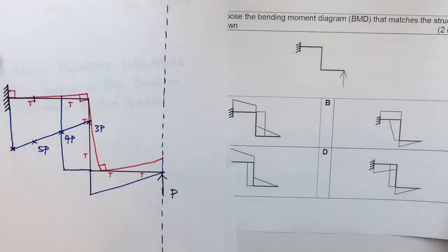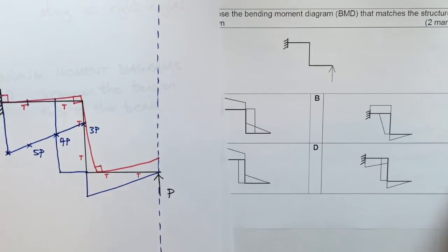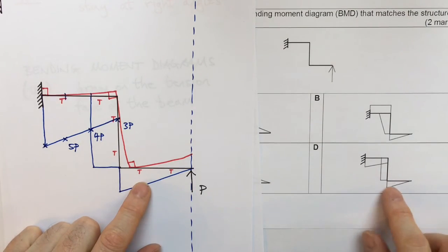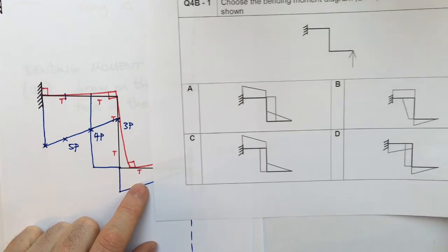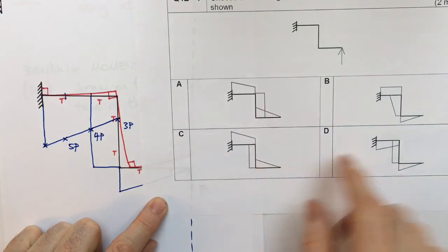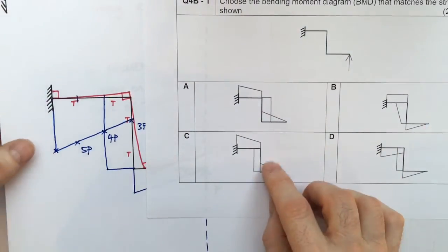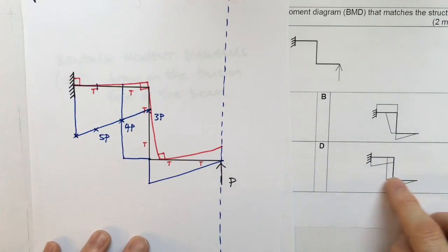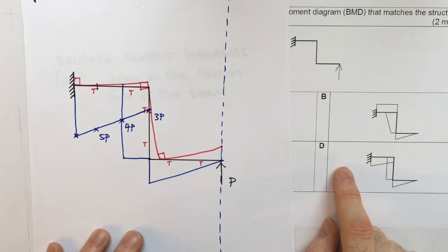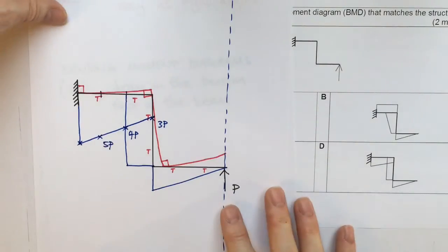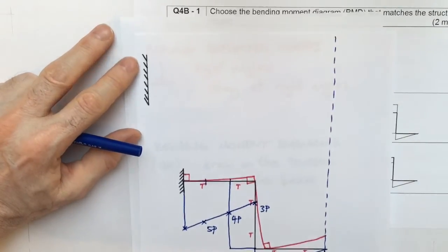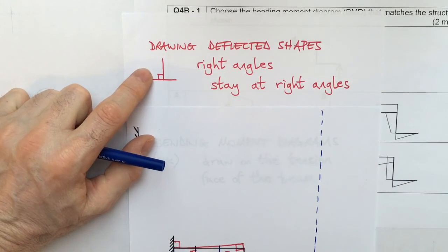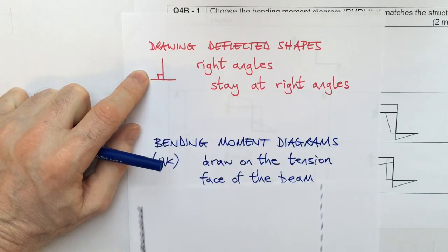See if we can work out which is the correct answer. So you know that the bending moment diagram starts off on the bottom face. So we're okay. We can rule out these two, because they've been drawn on the wrong face of this last leg. Now we've just got to choose between these and clearly it's going to be answer D. That's great.